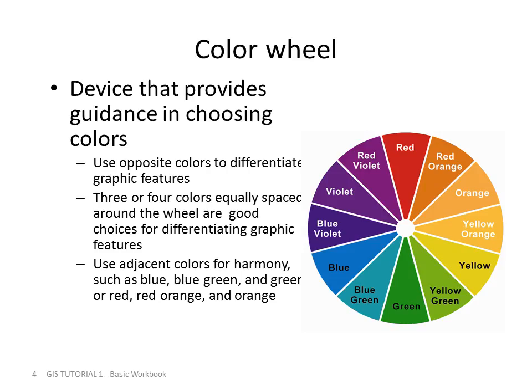We can use a color wheel to differentiate graphic features. Three or four colors equally spaced around the wheel are good choices for differentiating graphic features. You might want to use this to show differences among different areas or features on a map.